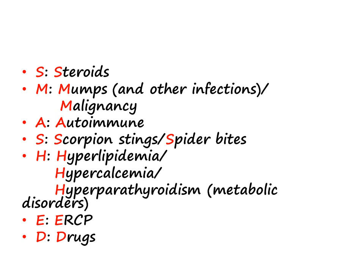To summarize, the causes of acute pancreatitis are: I GET SMASHED. I is idiopathic. GET stands for gallstones, ethanol, and trauma — the most common causes. SMASHED: S is steroids, M is mumps and malignancy, A is autoimmune, S is scorpion stings and spider bites, H is metabolic causes (hyperlipidemia, hypercalcemia, hyperparathyroidism), E is ERCP, and D is drugs.